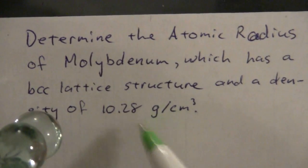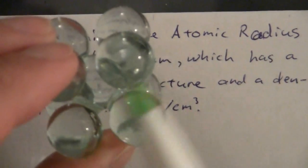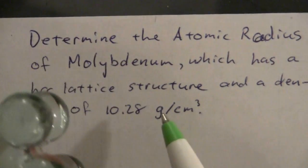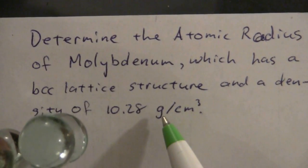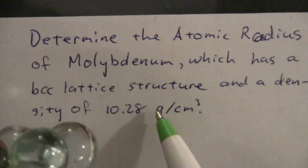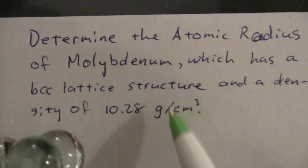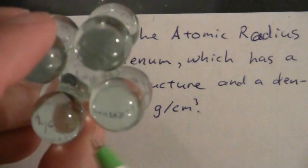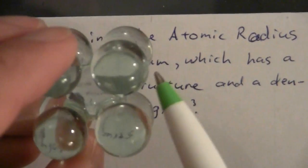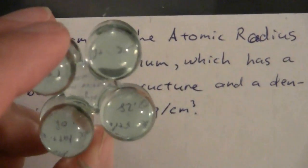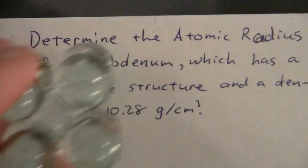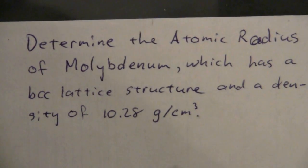Basically what I need to do is find the mass of the unit cell and then I can cancel out the grams from the density and get cubic centimeters. That will be the volume of this unit cell from which I can find the length of a side and we'll work from there to find the radius.